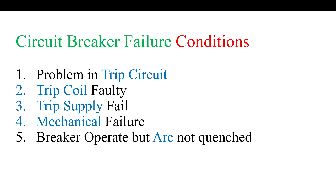The second failure condition is a faulty trip coil. The trip circuit is healthy and the tripping relay is healthy and gives a tripping command to the circuit breaker, but due to the faulty coil the circuit breaker does not operate. In this case the CBF protection will also operate.